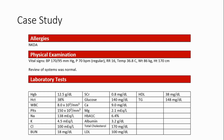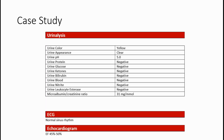Review of systems was normal. Laboratory studies were fairly normal with no abnormalities. Urinalysis was unremarkable. ECG showed sinus rhythm. Echo showed an ejection fraction of 45% to 50%.